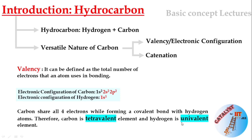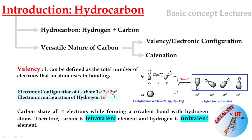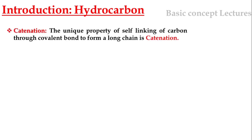Carbon's four orbitals — 2s, 2px, 2py, 2pz — blend with each other, their energies mix up and form four sp3 hybridized orbitals. These four hybrid orbitals of carbon combine with other hybrid orbitals to form a very strong carbon-carbon bond. This formation of bonds gives rise to a very long chain between carbon atoms, and this property of carbon is known as catenation — the unique property of self-linking of carbon through covalent bonds.